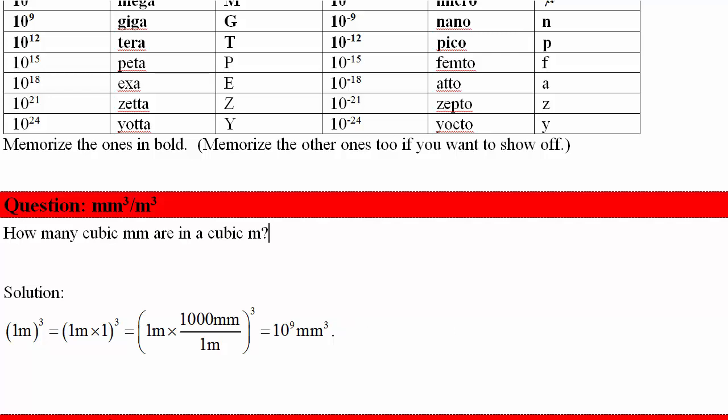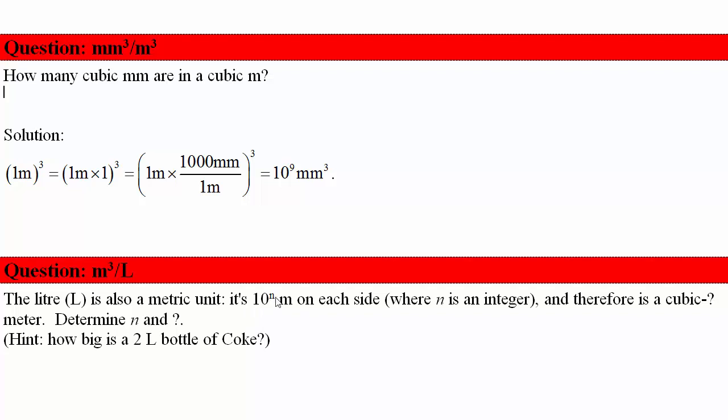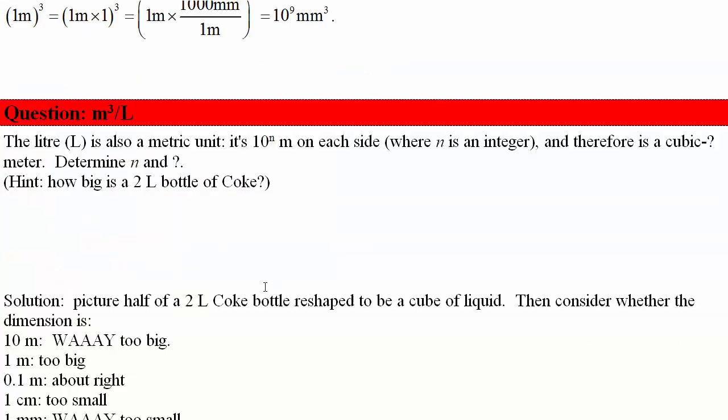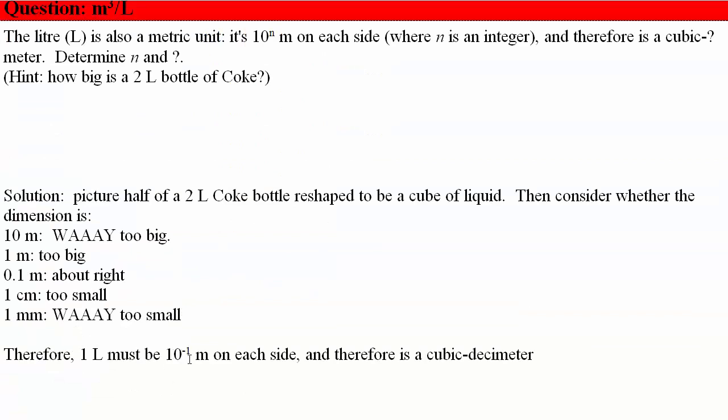Now the liter is also a metric unit. It's 10 to the something meters on each side where n is an integer and is therefore a cubic blah meter. Figure out what n and blah are. So one way to think about this is how big roughly is a two liter bottle of Coke? So think to yourself, is half of that going to be 10 meters on a side? Is it one meter? Is it 0.1, 0.01, 0.001? It turns out that a liter is a cubic decimeter. 10 meters is way too big. A meter on each side is too big. About 10 centimeters? That sounds about right. It's definitely bigger than one centimeter and certainly bigger than a millimeter. So you can come up with that it's a cubic decimeter. All you have to remember is that a liter is also a metric unit and then you can probably figure this out on your own.